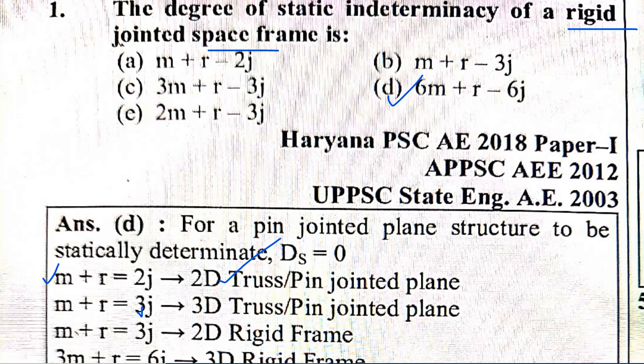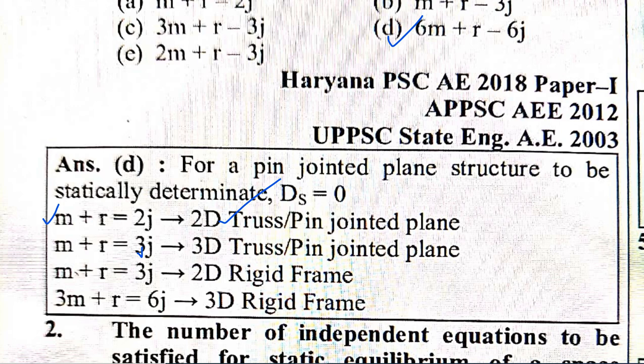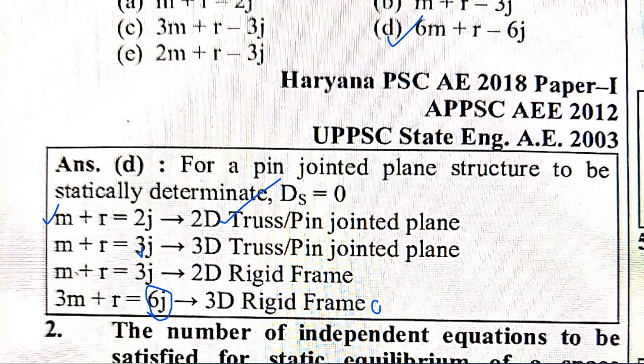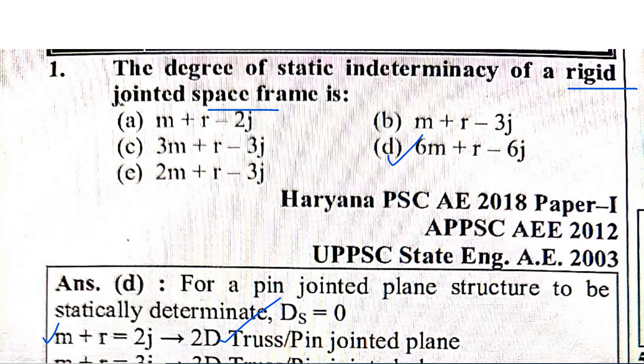For a 3D truss or pin jointed space frame, the equation is M + R = 3J. For a 2D rigid frame the condition is M + R = 3J. For a 3D rigid frame, the static indeterminacy equation is 6M + R - 6J. So option D is the correct equation.